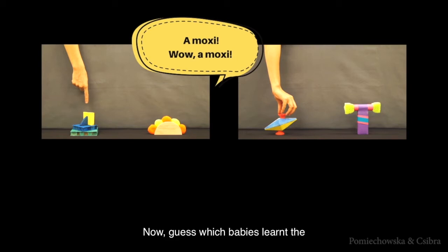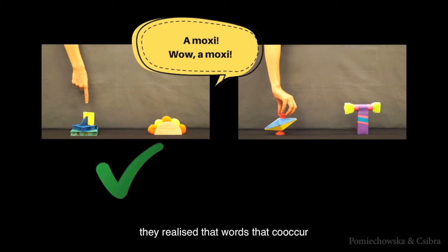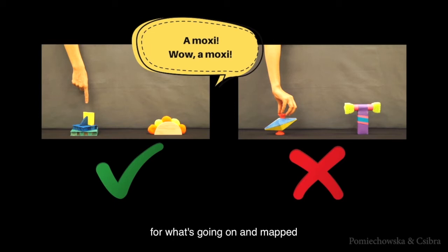Now guess which babies learned the new words? Those who saw pointing, those who saw grasping, or all of them? Well, only those babies who saw pointing realized that the words that co-occur with pointing are actually relevant for what's going on and mapped these words onto the objects that were pointed at. We believe this means that babies interpret what's going on when they hear people talking and take subtle differences between actions they see to make guesses about what the accompanying speech means.